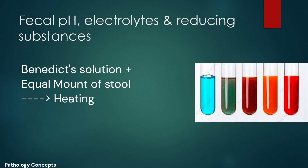A Benedict's solution is mixed with an equal amount of stool in a test tube and heated. After heating, green, brown, yellow, or red color indicates the presence of reducing sugar in the stool.